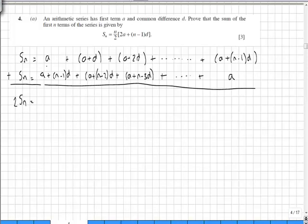Then if we compare each column, we can see we've got a plus a plus (n - 1)d, which would give us 2a plus (n - 1)d there. Then the second column we have again 2a's, and (n - 2)d plus d would be (n - 1)d.